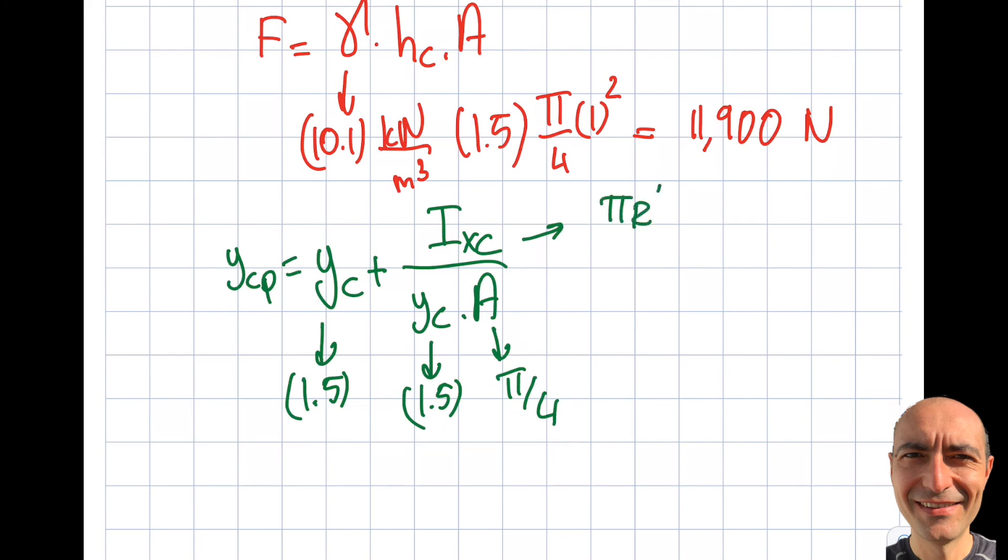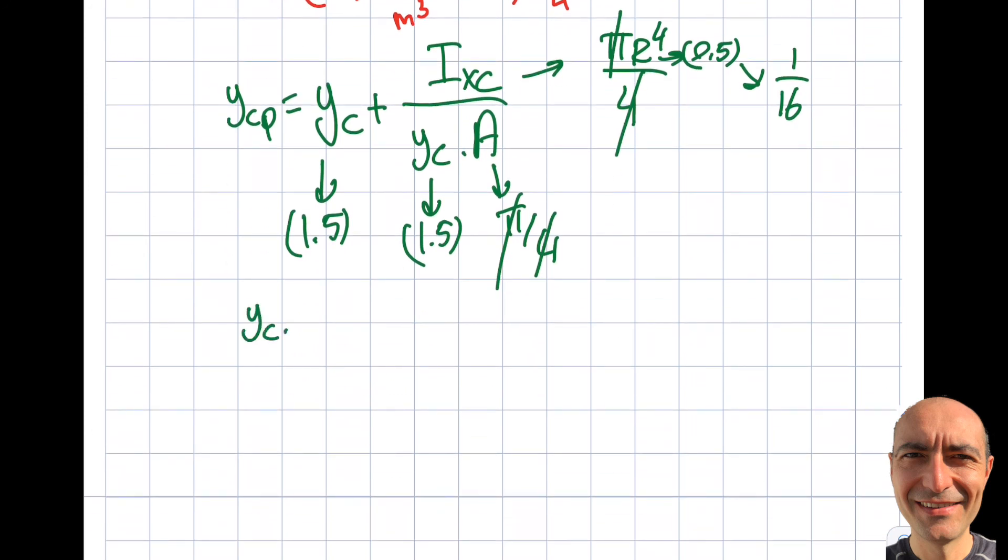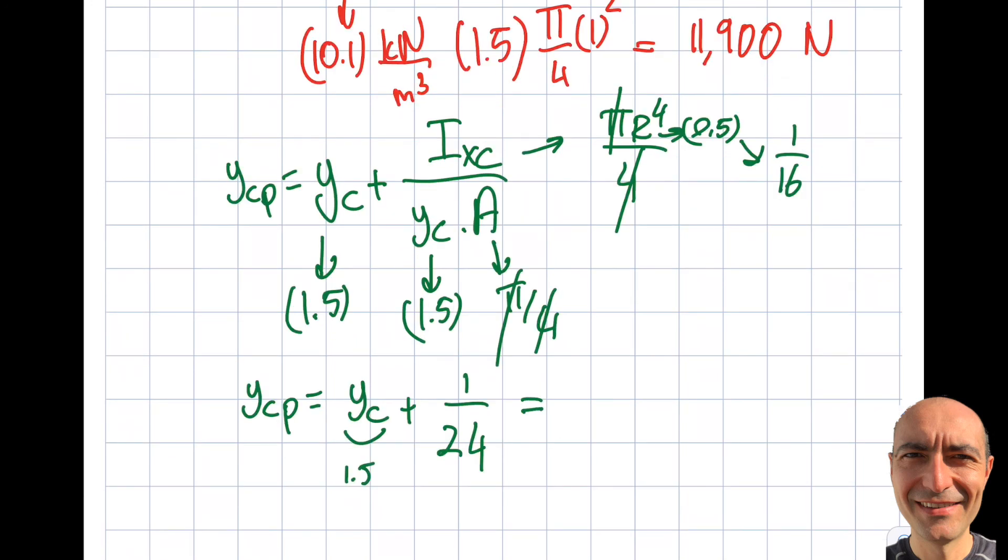And r, in this particular case, is 0.5, or 1 over 2. So this value of 0.5 to the power of 4 will be 1 over 2 to the power of 4, that's going to be 16. Let's take a look here. So you see pi over 4 is cancelled. I get 1 over 16 times 1.5, so I get myself YCP, YC, which is 1.5, as always, a little bit more than that. So this time around, I get 1 over 24. And when I do this, you will see that I'll get right around 1.54 meters. So this is actually the answer.